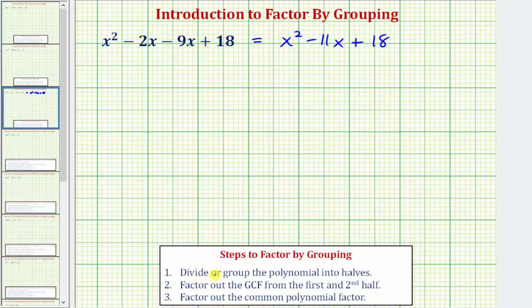So step one is to divide or group the polynomial into two halves. Because we have four terms, the first half would be the first two terms, the second half would be the second two terms. So let's rewrite this as x² - 2x, that's the first half. The second half is -9x + 18.